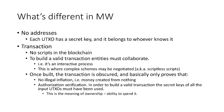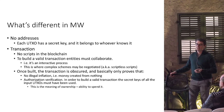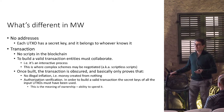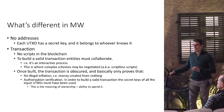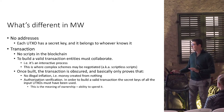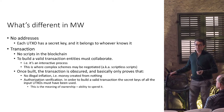How is Mimblewimble different from other protocols? It's very different. First and foremost, there are no addresses. In Mimblewimble, there is just a set of UTXOs. UTXO stands for unspent transaction output — it's an object which denotes some value, and each UTXO has a secret key. It belongs effectively to whoever knows the secret key. There are no scripts, unlike Bitcoin.